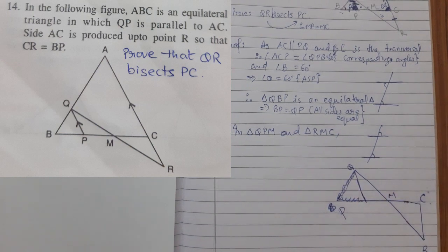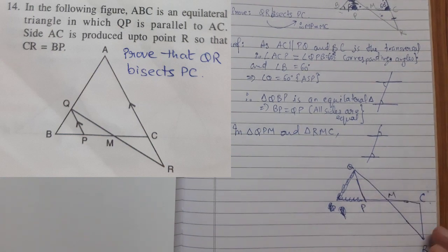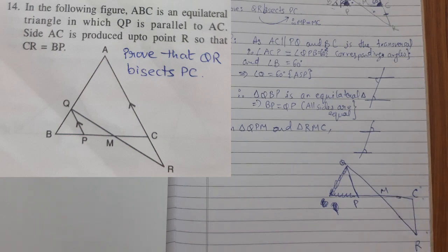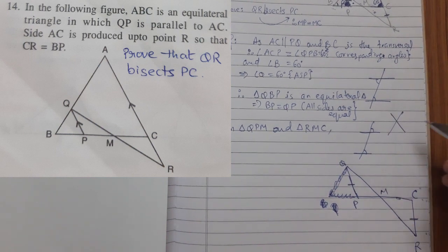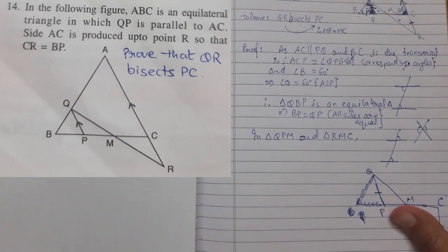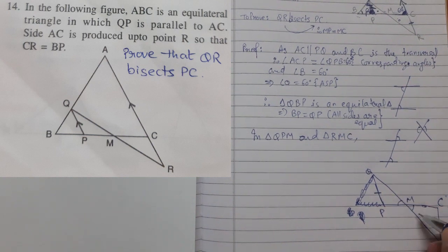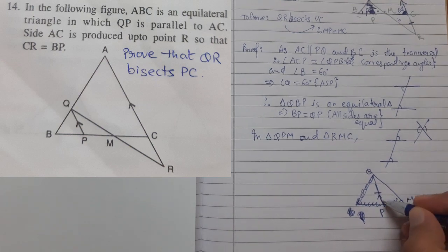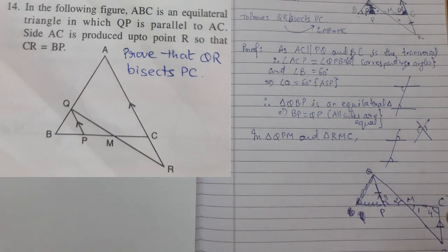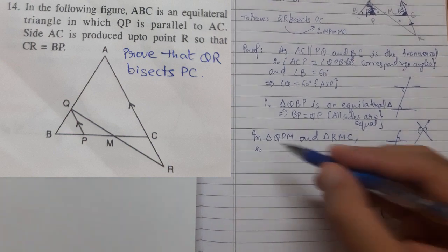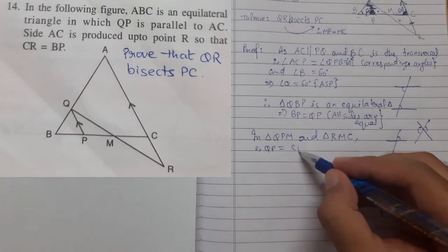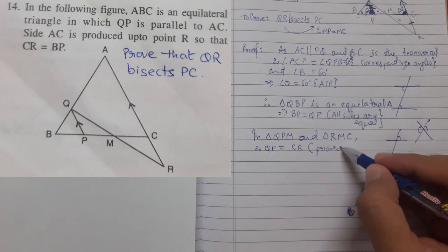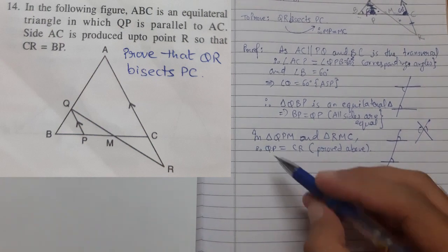Now we can move on to the congruency part. In triangle PQM and triangle RCM: we already know QP equals CR as shown above. Since intersecting lines create alternate interior angles that are always equal, this angle equals this angle. And since this line is parallel to this line, this angle equals this angle by the alternate interior angle property. Therefore QP equals CR — proved above — and angle 1 equals angle 2.